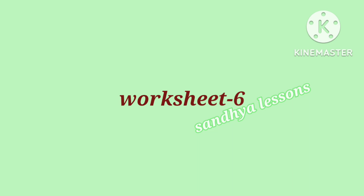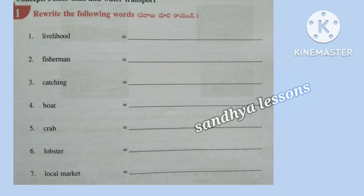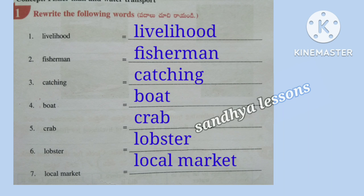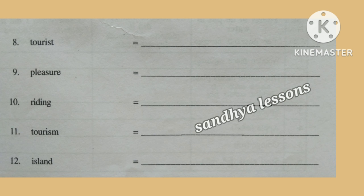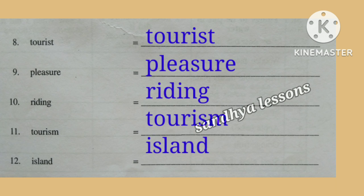Worksheet 6. First, rewrite the following words: Livelihood, Fisherman, Catching, Boat, Crab, Lobster, Local Market, Tourist, Pleasure, Riding, Tourism, Island.